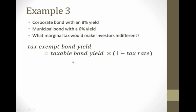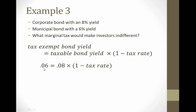Again, we're going to use the exact same equation. This time, we're going to solve for the tax rate. Filling in what we know, we have the tax exempt yield of 6%, the taxable yield of 8%. We'd like to know the tax rate that makes these two equivalent.